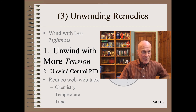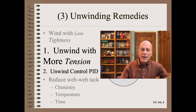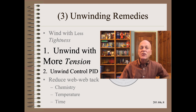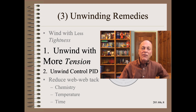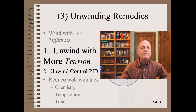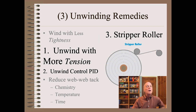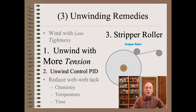We will finish with your customer's unwind — not because it's the least important, but only because it is the last in the chain of processing. There are three unwinding remedies of moderate strength. The first is to increase unwinding tension. The second is to tune the tension controller using best practices outlined in chapter six of the 750-page web handling handbook. Finally, adding a stripper roller will greatly increase the range of products that can be unwound successfully by controlling the departure tangent. The strip roller is something like a nip roller used on winders but is much less fussy for mechanical or control design.